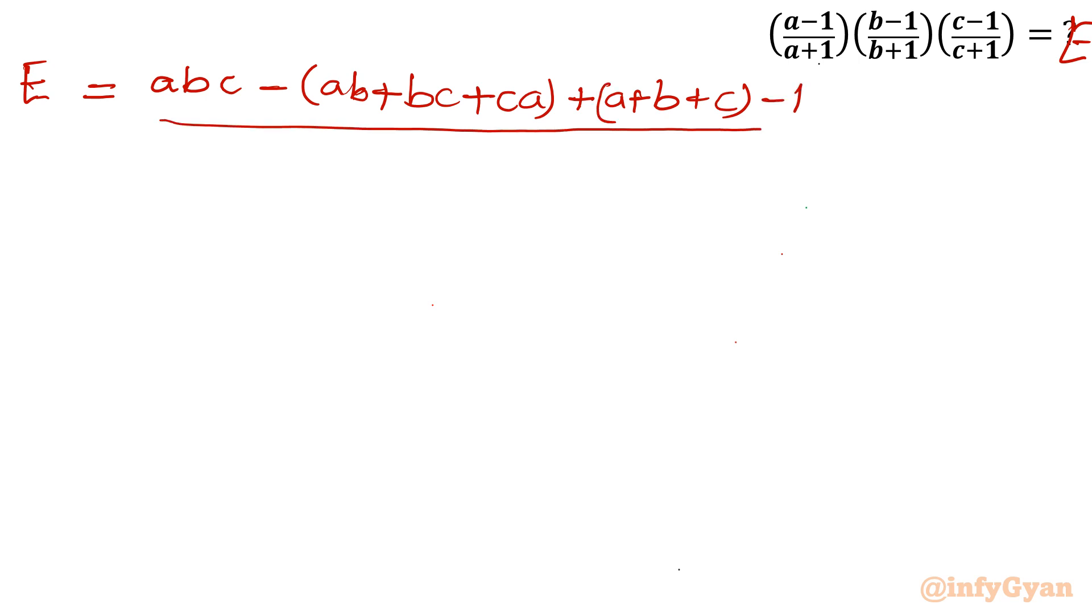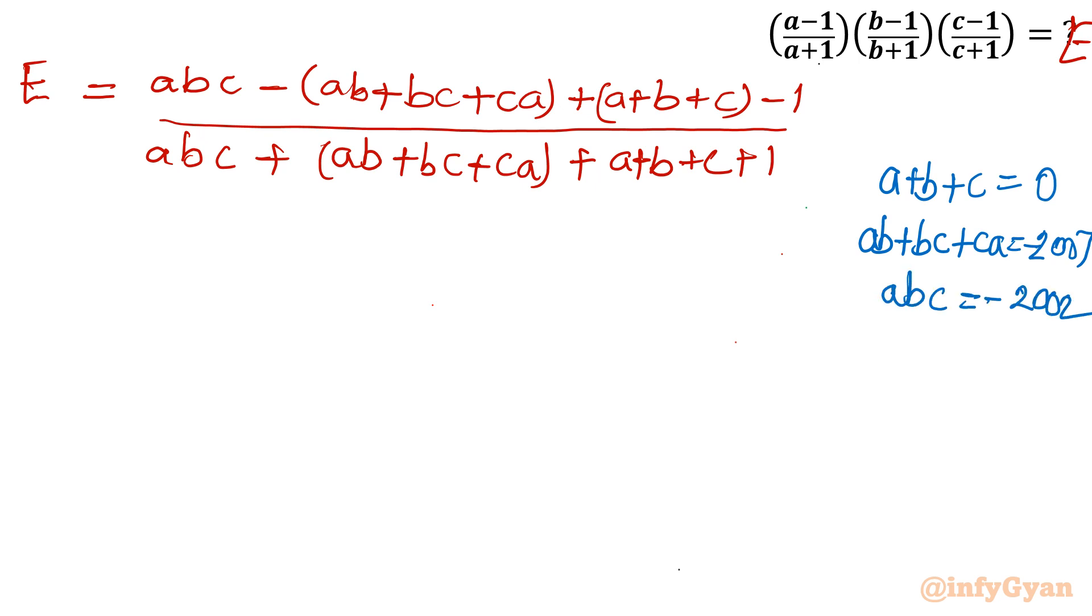Divided by abc plus everything with plus sign. Same values we are having but with plus sign, plus a + b + c plus 1. Now I will write the three equations which we framed: a + b + c equals zero, ab + bc + ca equals -2007, and the product abc equals -2002. This is what we know.